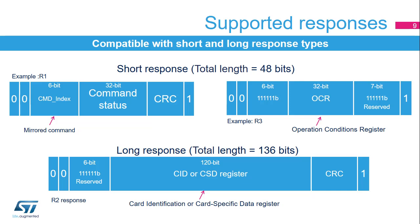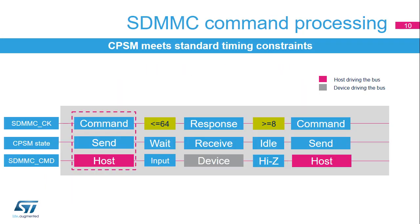The SDMMC interface also features the automatic detection of a StartBit, Command Index Extraction, 32- or 128-bit response extraction, and automatic CRC7 verification. Once the SDMMC ARG and SDMMC CMD registers are programmed with CMD INDEX, WAIT RESP equals 01 or 11 and CPSM EN equals 1, the CPSM moves from IDLE to SEND state, and the host starts driving the SDMMC CMD line to send the command to the card. If the CPSM is programmed to wait for a response (WAIT RESP equals 01, 10, or 11), it enters the wait state, and the command timer starts running.